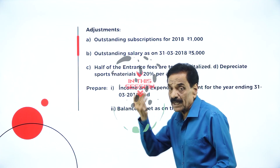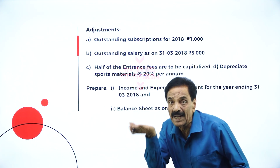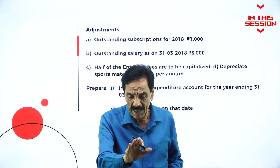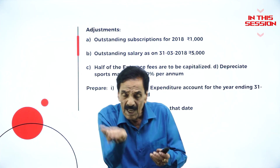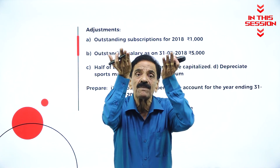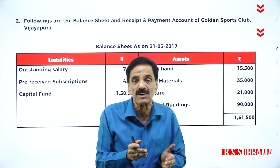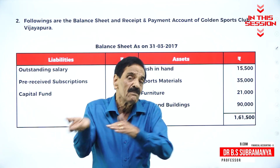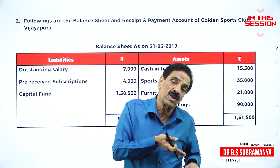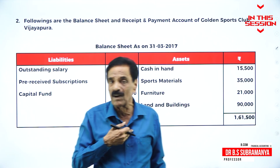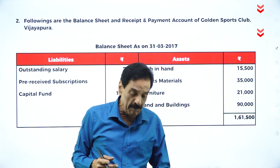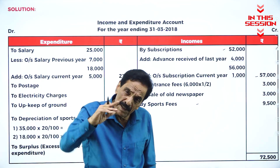Outstanding subscription of the current year should be added. For the last year and next year subscriptions, those are not outstanding. If we have received in advance — for 2018 we received in 2017 — it is an advance liability, but when you come to 2018 it becomes income.